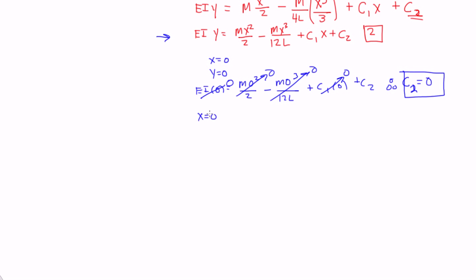We get x equals L, y is equal to 0. So if I plug that in to the same equation, I can get EI times y, which is 0, is equal to mx becomes L, so L squared over 2 minus mL cubed over 12L plus C1 times x, which is L, and then plus C2, but up here we said C2 is equal to 0, so we can plug that in.